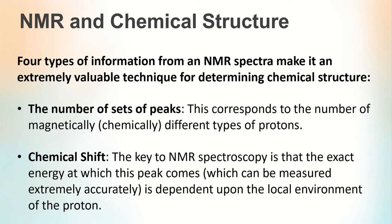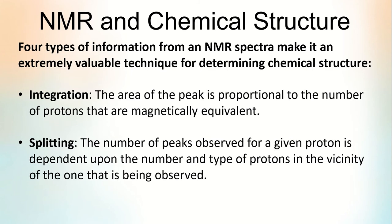The key to NMR spectroscopy is that the exact energy at which a peak appears, which can be measured extremely accurately, is dependent upon the local environment of the carbon. The third type of information is integration — the area under the peak is proportional to the number of magnetically equivalent protons. The fourth type is splitting: the number of peaks observed for a given proton is dependent upon the number and type of protons in the vicinity of the one being observed.